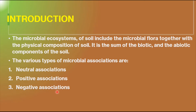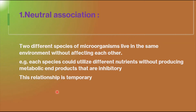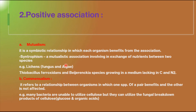In neutral association, two different species of microorganisms live in the same environment without affecting each other. Each species can utilize different nutrients without producing metabolic end products that are inhibitory — they have no negative impact on the other species. This relationship is temporary; if the demand for nutrients changes, the relationship may also change.